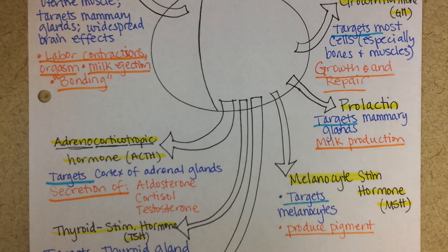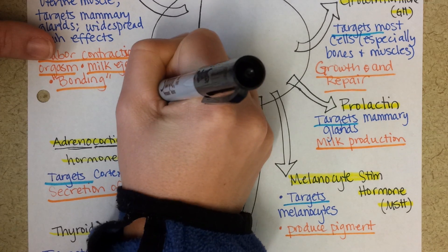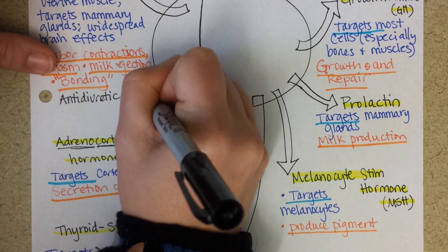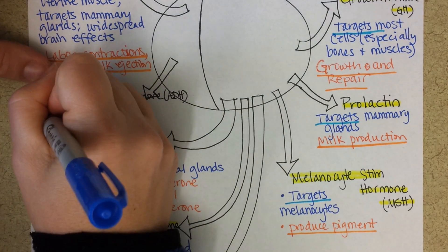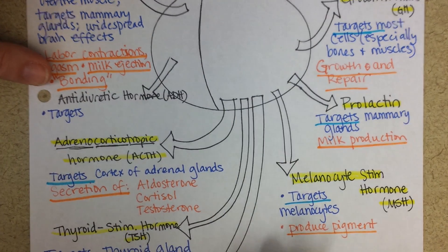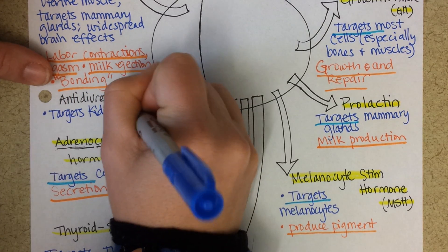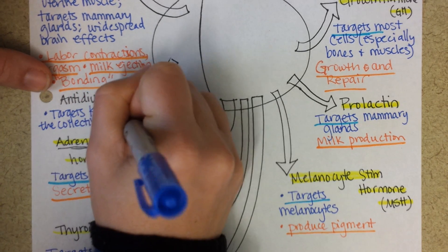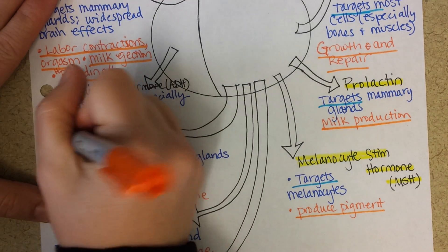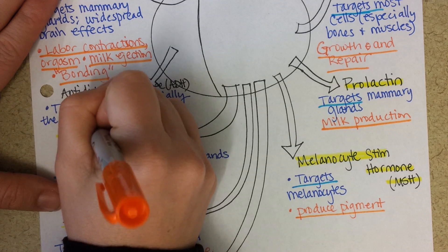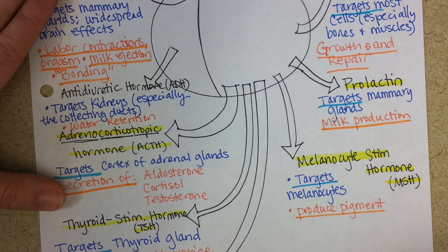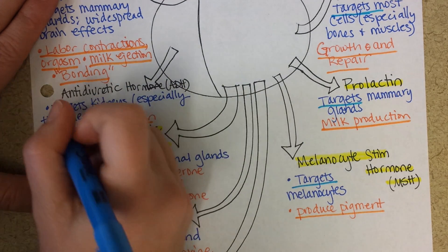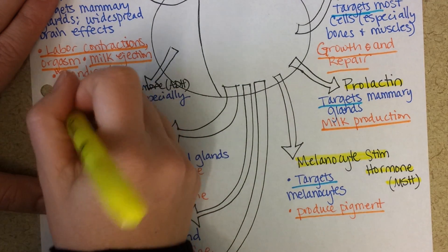The last hormone, which comes out of the posterior pituitary gland, is anti-diuretic hormone, or ADH. It targets the kidneys — especially the collecting ducts of the kidneys — and its function is to cause the kidneys to retain more water, so water retention. If you're dehydrated or your blood pressure is low, you'll release more anti-diuretic hormone, which helps you retain more fluid so your urine will be more concentrated.